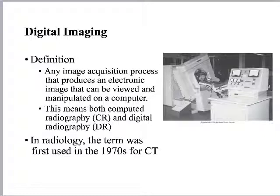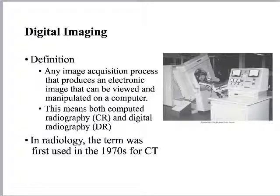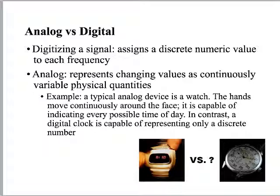Digital imaging is any way of getting a picture that can be manipulated and viewed on a computer. You do it every day with your cell phone — your cell phone camera is actually a form of direct digital imaging. For x-ray purposes, this first came into use in the 1970s with CT. As soon as CT scanners showed up in the department, we had to think about how computers look at pictures. It really developed into a full-blown part of our work sometime in the early 1990s.